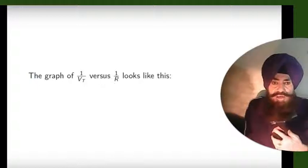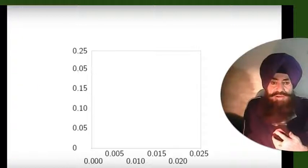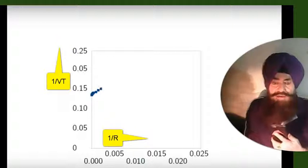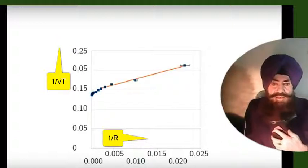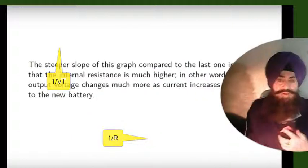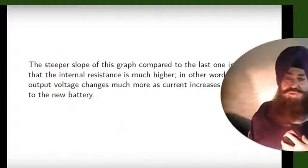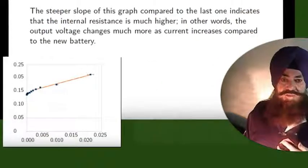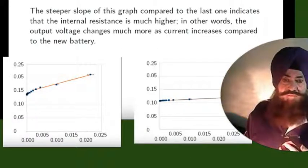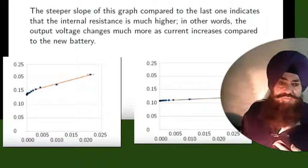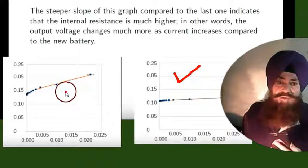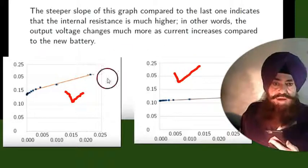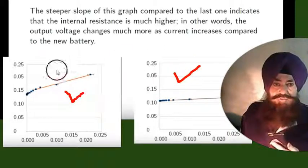We draw a graph of 1/VT versus 1/R. Now this slope is greater than the previous slope, which shows very important information. This graph is for the freshly prepared battery, and this one is for the used battery. Compare the two.